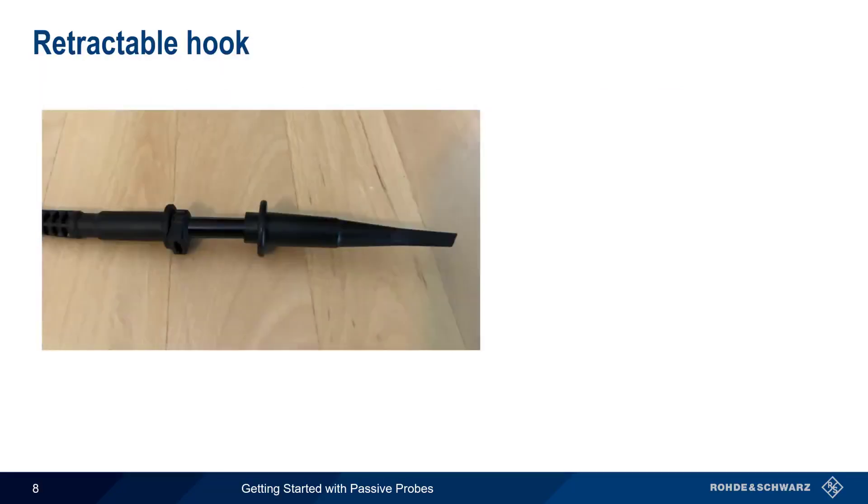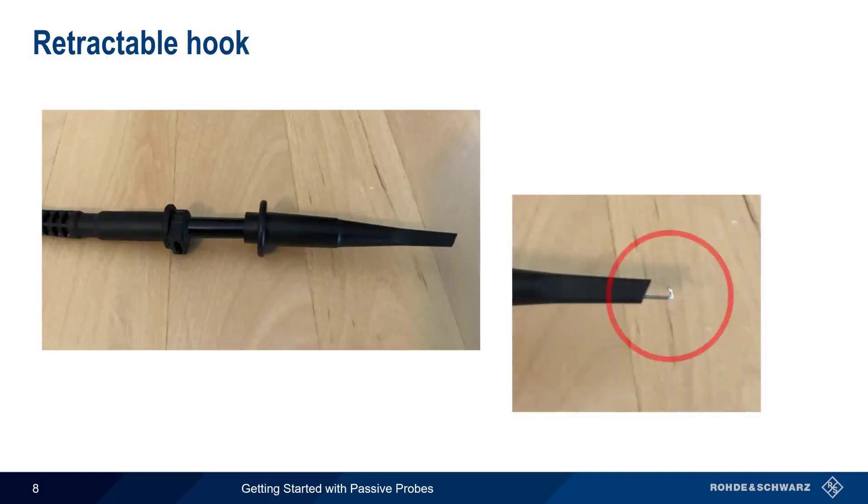The retractable hook fits over the standard probe tip, and contains a spring-loaded hook that makes it easy to grab and maintain a stable connection to things like component leads and wires. Of all the passive probe accessories, the retractable hook is by far the most common and most widely used.